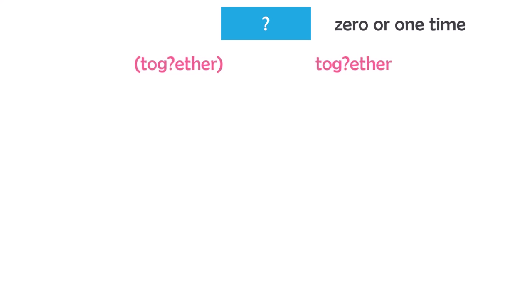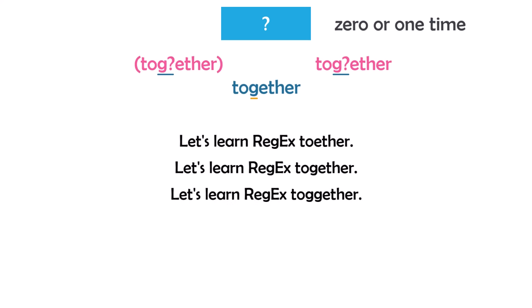Question mark means that a character, class, or group exists 0 or 1 time. For example, in a pattern searching for the word 'together' with G? after it, the letter G is optional. So it could exist once or not at all. Given three texts, I will find the word in the first text (without G) and in the second text (with G once), but not in the third text where G exists twice.